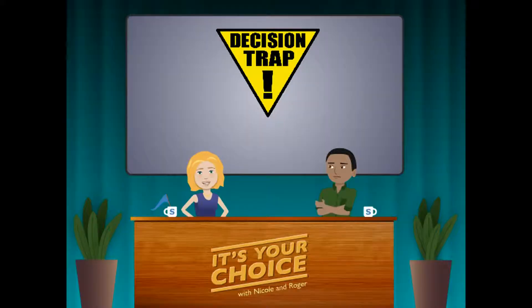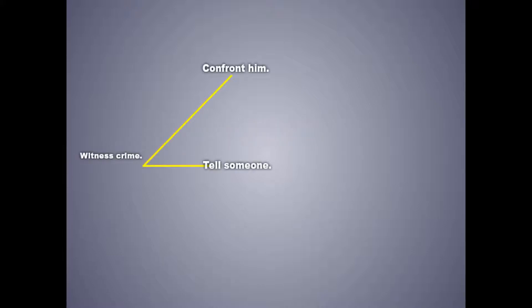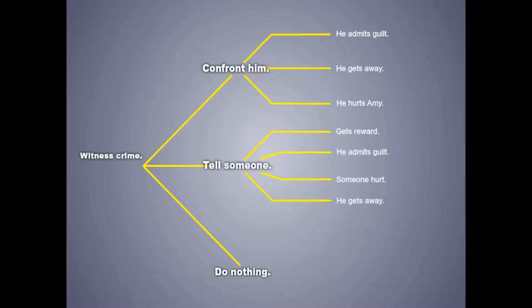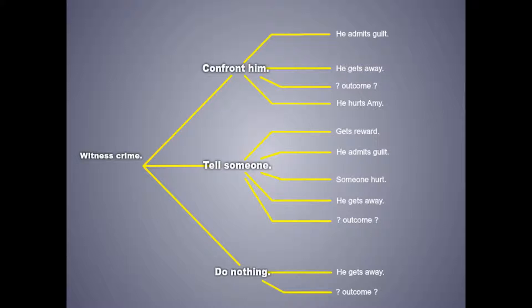Now that we know some of the rules, let's estimate the likelihood of the outcomes we came up with last time for Amy's decision about the shoplifter. Here are the alternatives: Amy confronts him, Amy tells someone, and Amy does nothing. Let's both fill in the chart with probabilities for each outcome. Remember, the total probabilities for each alternative should add up to 100%. But what if something else happens that we didn't even imagine? Good point — we haven't thought of all the possible outcomes, and we should acknowledge that. For this example, let's say for each alternative there's a 5% chance that something unforeseen happens. This is a great way to acknowledge the possibility space. Viewers, add your estimates in the chart, then we'll reveal our answers.